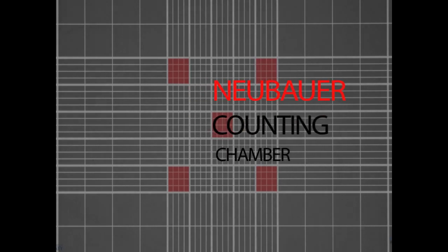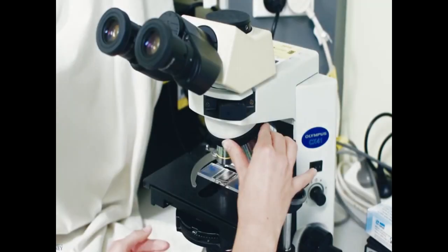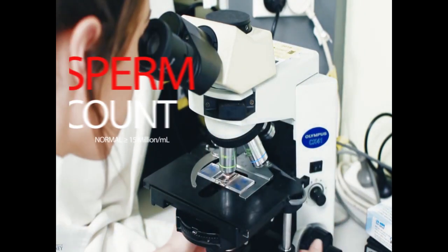Sperm concentration is the number of sperms determined in millions per milliliter. This is achieved using specialized counting chambers such as the Neubauer chamber as shown here. Normal sperm concentration is 15 million sperms per milliliter.